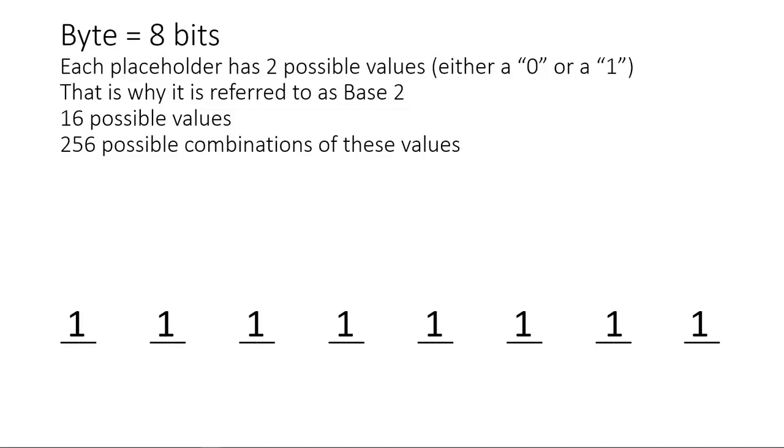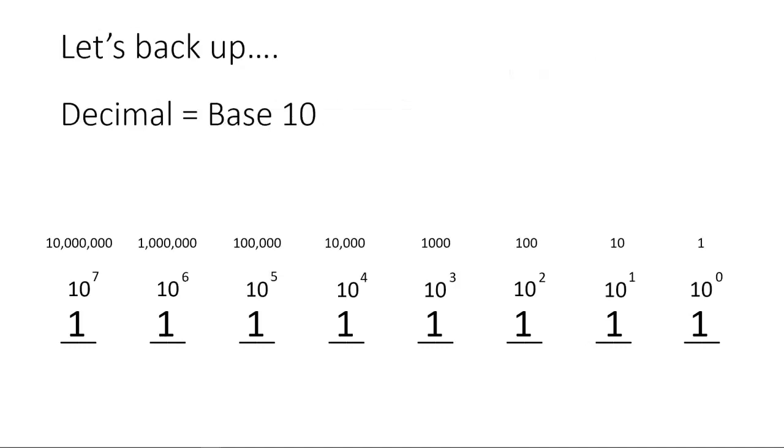But let's back up for a minute and talk about these in terms we're more familiar with. So if we use base 10 on the same eight placeholders, it would look like this. Each placeholder has 10 possible values in a given placeholder rather than two.